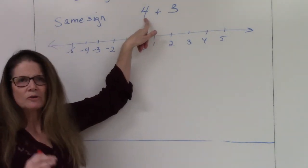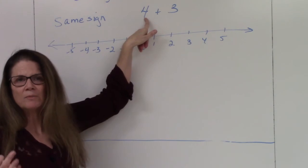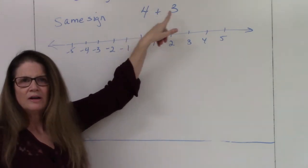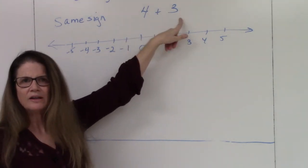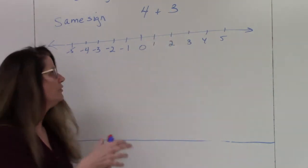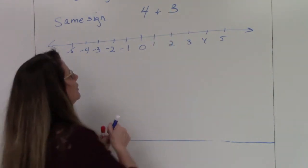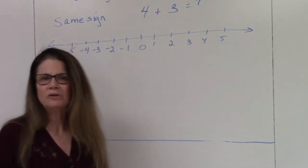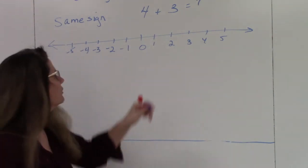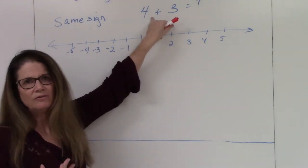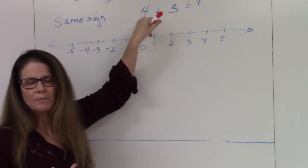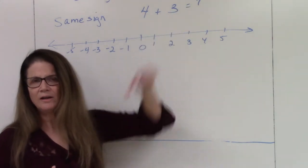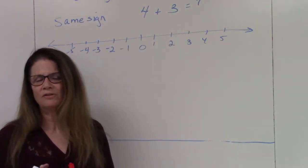If you think of positives and negatives in terms of money, it becomes clearer. When dealing with positive numbers, we're talking about earning money. I've earned four dollars and another three dollars, so I have a total of seven dollars. This is what you've been doing since kindergarten — adding positive numbers.